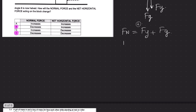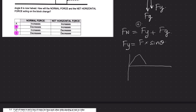Since Fg is not changing, the normal force is directly dependent on Fy. We can find Fy using the formula: Fy equals F times sine theta. Since F is constant, sine theta directly affects Fy. If the angle is halved — say from 60 degrees to 30 degrees — the value of sine theta decreases. So if theta decreases, sine theta decreases, Fy decreases, and therefore Fn decreases.